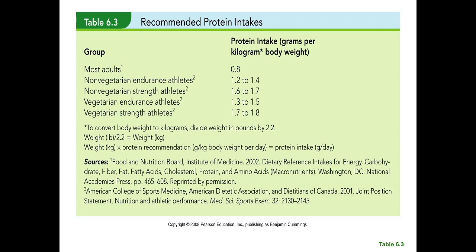Most adults with a low activity level — sitting at a desk all day or even moderately active — probably don't need more than 0.8 grams of protein per kilogram of body weight. However, if you are doing endurance athletics and you are not a vegetarian, you probably need 1.2 to 1.4 grams per kilogram. If you are a vegetarian you might need a little bit more protein because you have to branch out to get more amino acids. For very intense athletics you might bump it higher, but really nobody needs to eat more than about two grams of protein per kilogram of body weight per day.